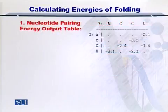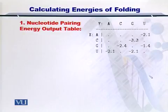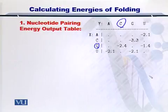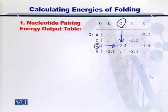Now we will see how to calculate this energy. As you know, we have the energy output table as given here, and you can see from this table that if G and C form a bond, then minus 2.4 kcal is given out.